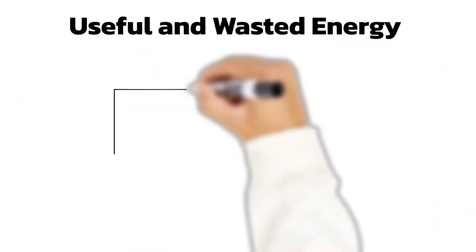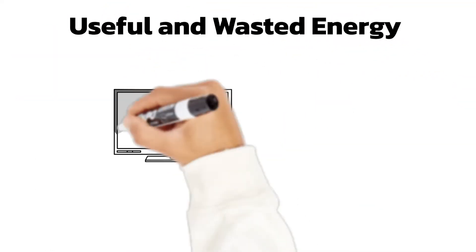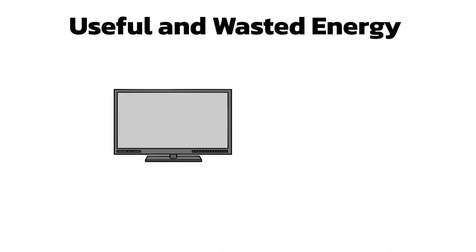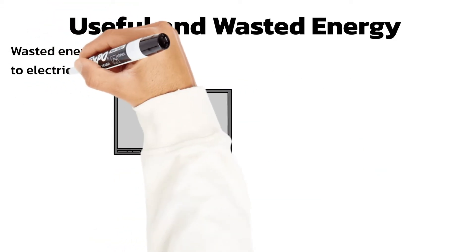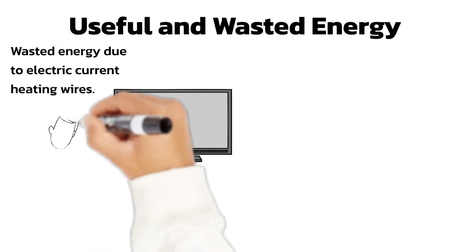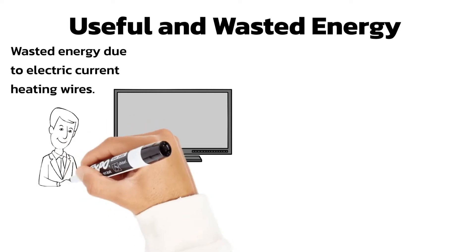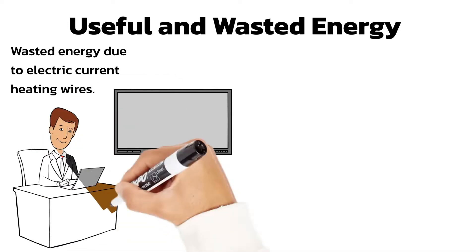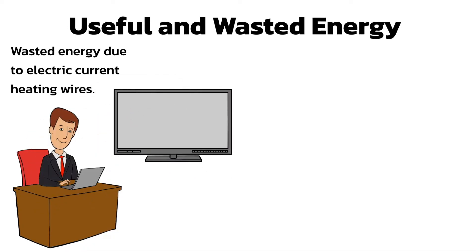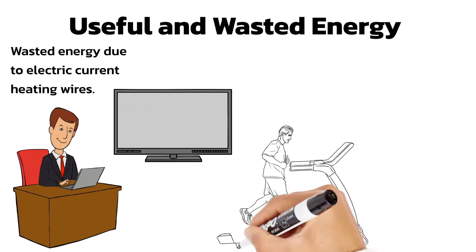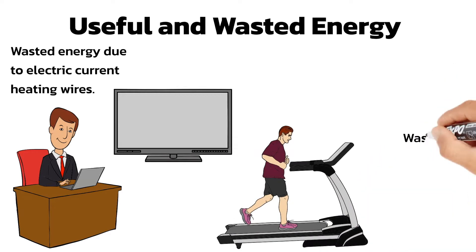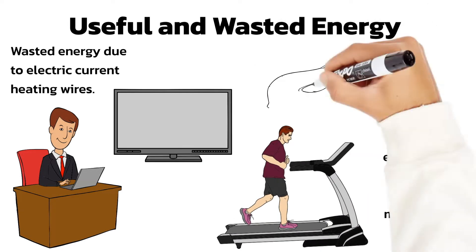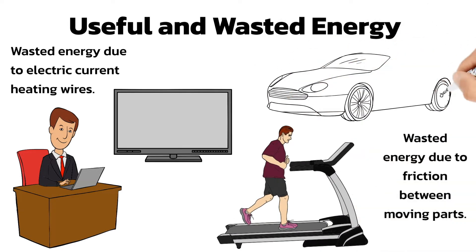However, when electric current flows in the wires of a TV or a computer, the device can warm up. Also, friction between the moving parts of a machine like a treadmill or car causes the parts to warm up. So some of the energy supplied isn't transferred into useful energy.